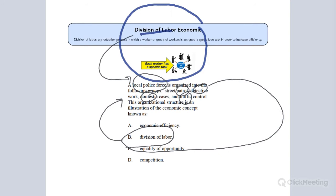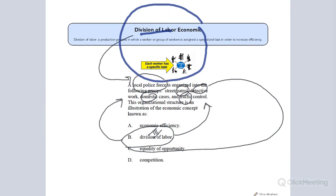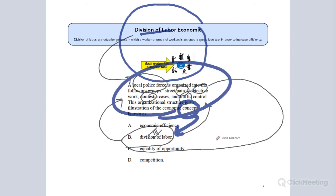Some of these questions are going to be fairly easy as long as you already have in your mind what this idea is — division of labor — and you can recognize it when it comes in a question. You're making sure you understand each one of these phrases, because if you saw this on the test, you'd want to be able to recognize it. They give you a scenario and you've got to match up — they're describing the concept and you have to recognize the concept. This is probably the easiest type of question you're going to have.